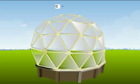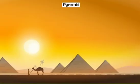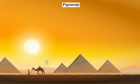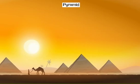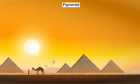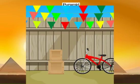This is a curved dome which has many triangles joined side by side. This is a pyramid of Egypt which has four triangular faces. Now try to find out some other examples in your surroundings.